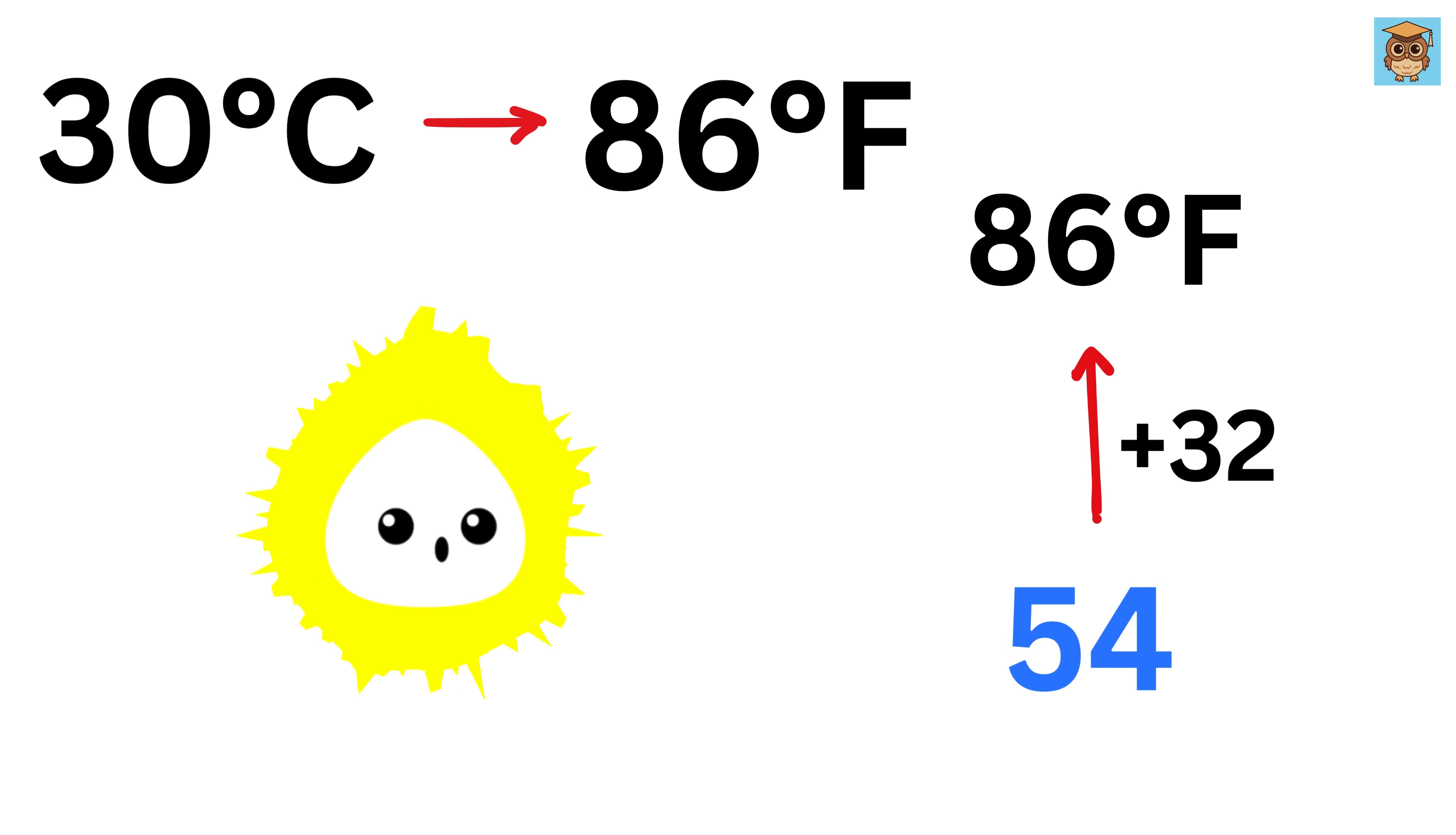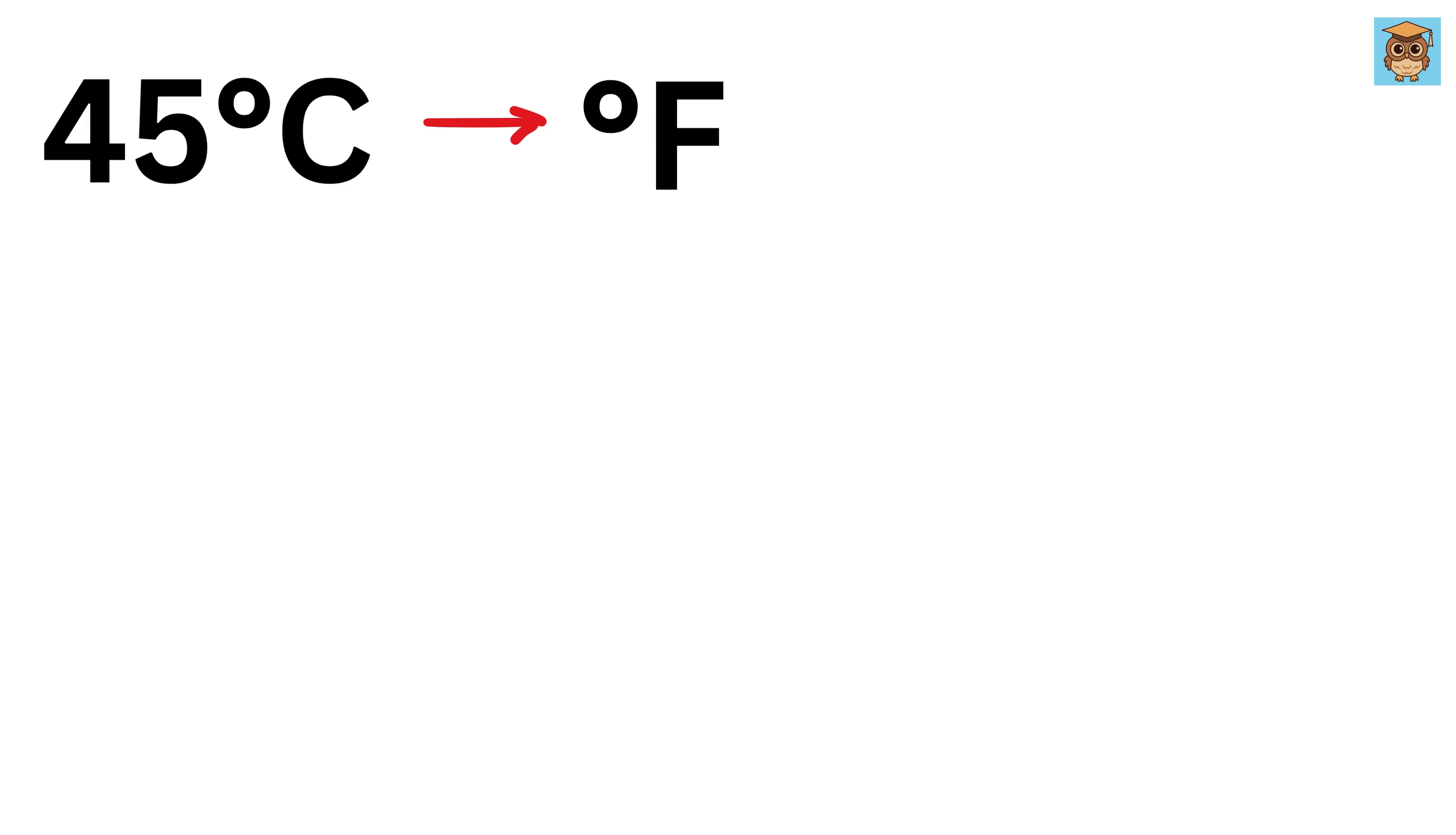Next example: convert 45 degrees Celsius to degree Fahrenheit. First double the Celsius value, so 45 becomes 90.